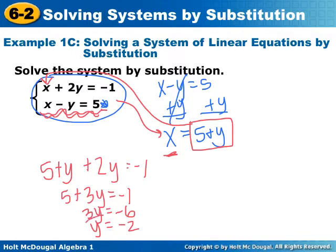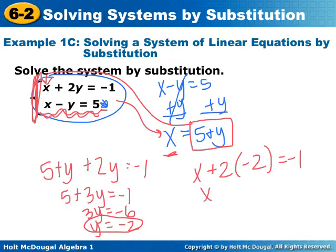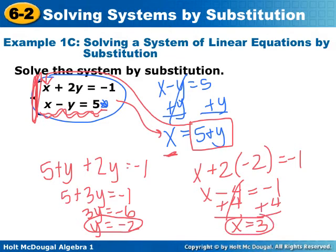Now I found y. I need to substitute that back in somewhere in order to find x. So I'm going to put it into, it doesn't matter which equation you use, just make sure you use one of these original ones up here. So x plus 2 times negative 2 is negative 1. x minus 4 is negative 1 plus 4. So x is 3. So my final answer is 3, negative 2. Because x is 3 and y is negative 2.